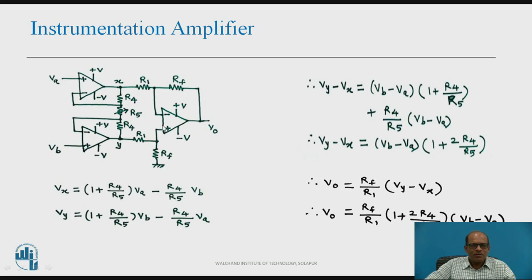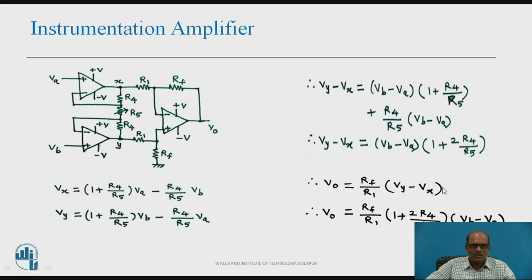The second operational amplifier along with R1 and Rf is a difference amplifier. Therefore, the output equation is: phi O equals (Rf/R1) × (phi Y minus phi X). This is the equation for the output of the second difference amplifier.